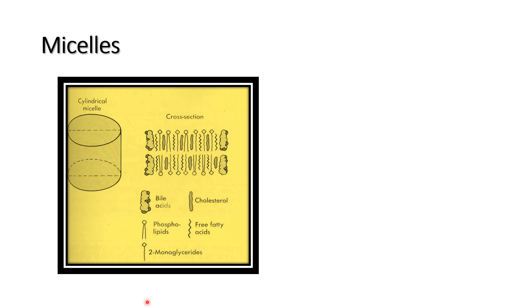Micelles are cylindrical shaped aggregates of monoglycerides, fatty acids, and bile salts. Micelles are water-soluble structures, so they have an outer hydrophilic end and inner hydrophobic end. They contain cholesterol, fatty acids, and bile salts.